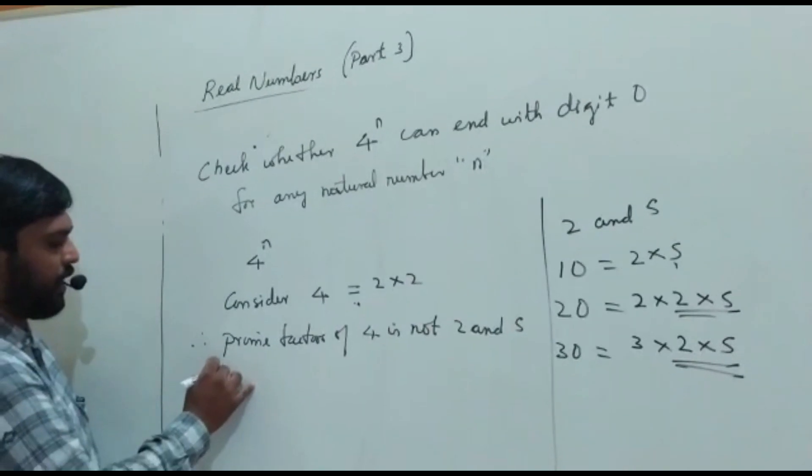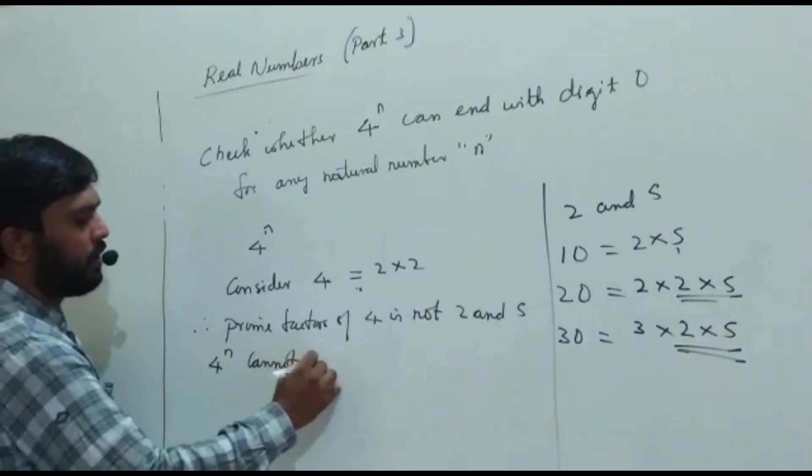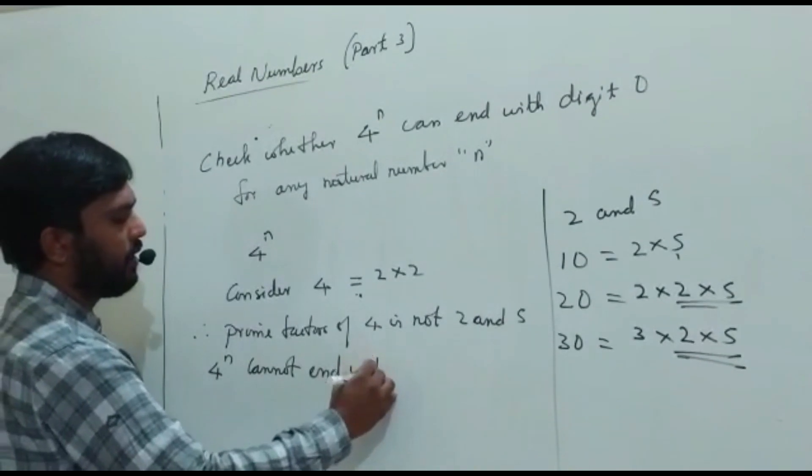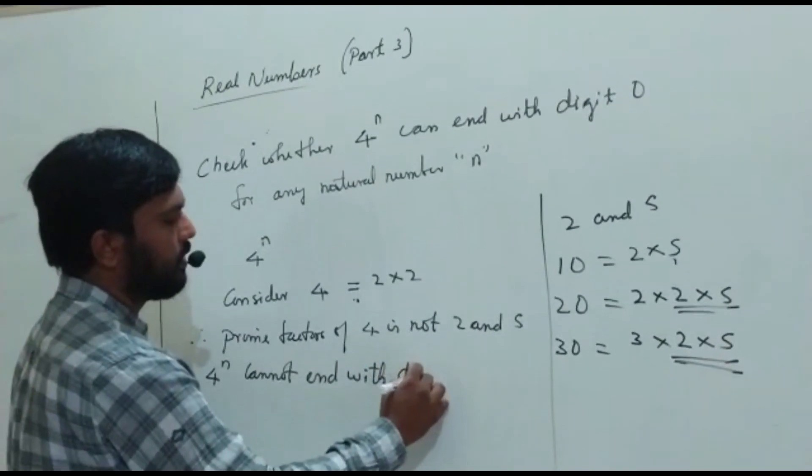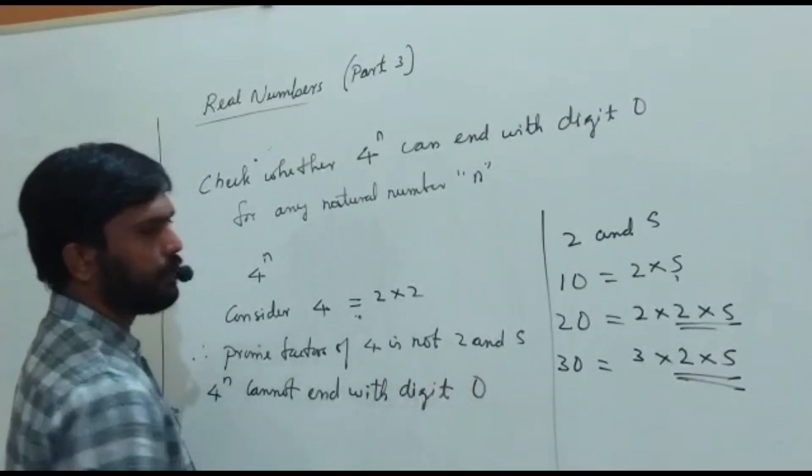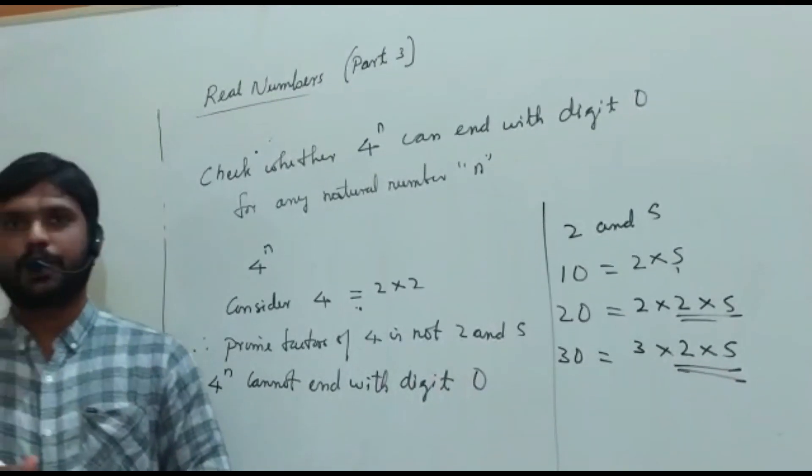4 to the power of n cannot end with digit 0. You can expect this kind of questions.